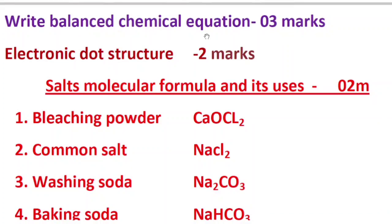Practice thoroughly — practice makes man perfect. The next one is electronic dot structure, which may be asked for two marks. We cannot say 100% it will be there — in the model question paper they gave magnesium chloride, but the state level question paper did not have it. Still, concentrate because they may ask for two marks.